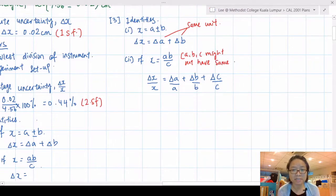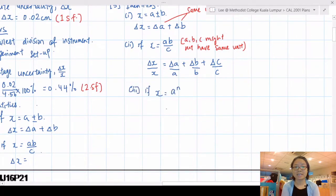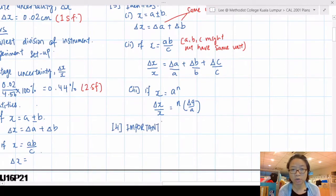The percentage uncertainty of x is the total of percentage uncertainties of a, b, and c. If you have a to the power of n, you multiply the percentage uncertainty n times. This is very important when you write your final answer. Normally you spend a lot of time calculating and then you lose that mark because of this, it's painful.